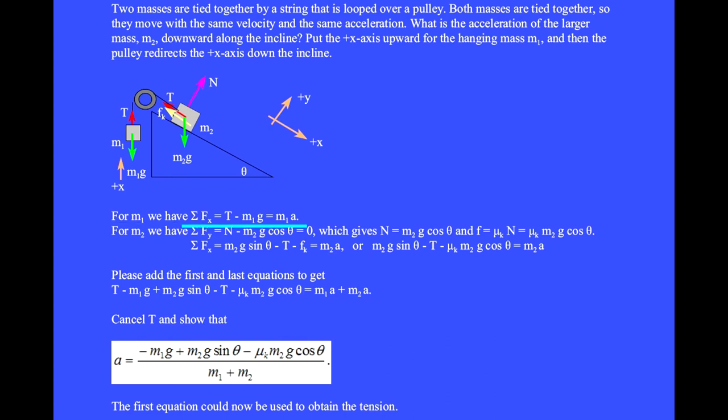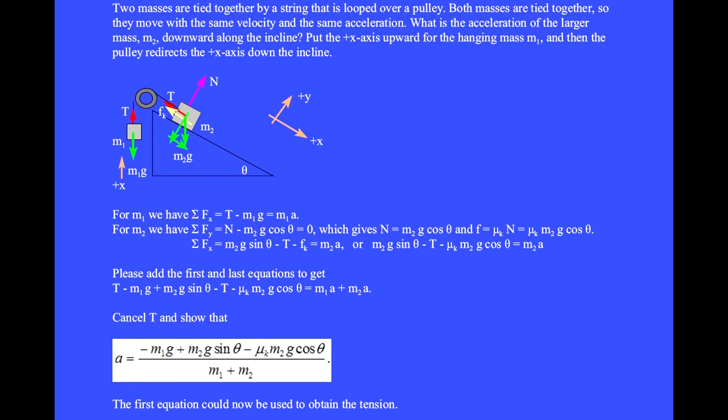For the hanging mass m1, we have the sum of the x forces equals plus T minus m1g equals m1a. This time we break the weight of m2 into x and y components. For m2, we have the sum of the y forces equals N minus m2g cosine theta equals 0, which gives N equals m2g cosine theta, and the kinetic frictional force equals mu k m2g cosine theta. The sum of the x forces equals m2g sine theta minus T minus mu k m2g cosine theta equals m2a.